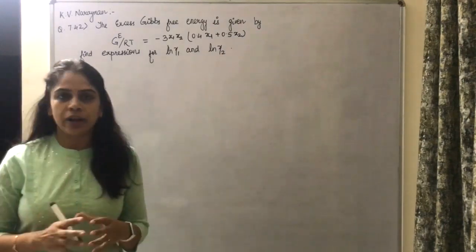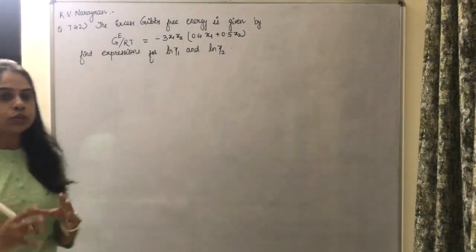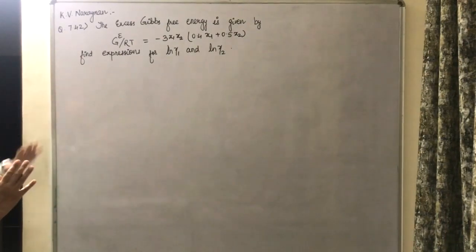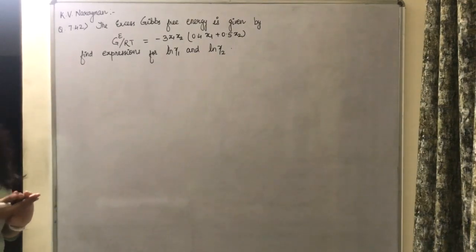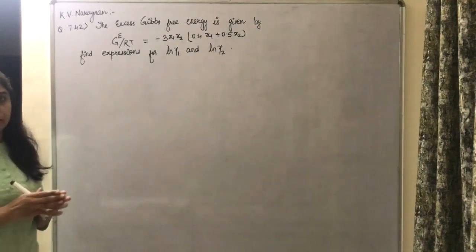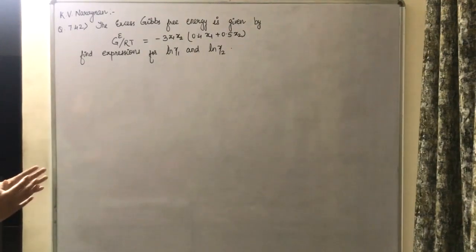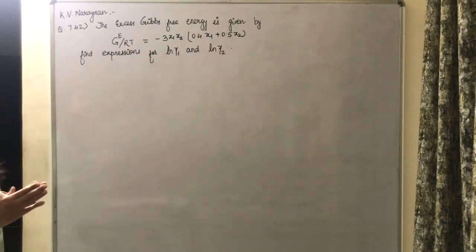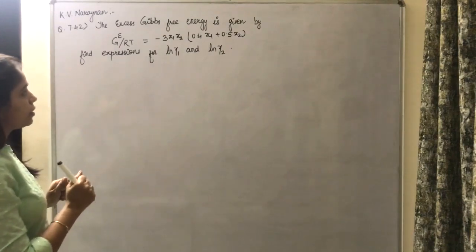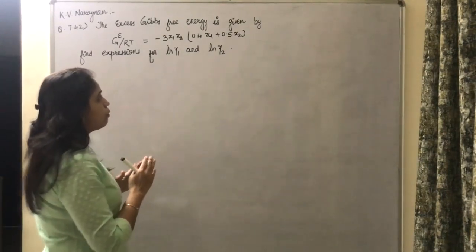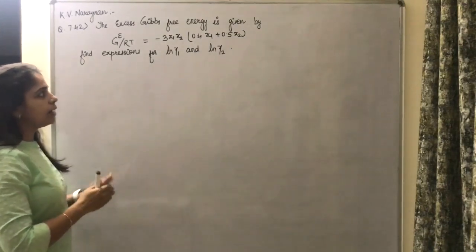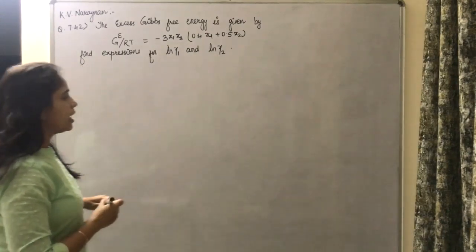Hello everyone. In today's video I am going to discuss one numerical problem. This question is from K.V. Narayanan, question number 7.42, and this is related to Gibbs free energy. We need to find the activity coefficients for the given relation. The excess Gibbs free energy is given by: GE upon RT equals minus 3·x₁·x₂·(0.4·x₁ + 0.5·x₂). Find expressions for ln γ₁ and ln γ₂.